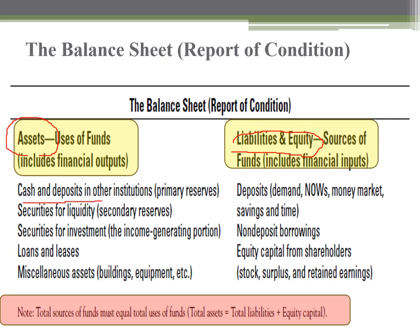The assets are comprised of cash and deposits in other institutions, called the primary reserve, and securities for liquidity, called the secondary reserve. Then we have securities for investment as the income-generating portion, followed by loans and leases, and finally fixed assets of the bank, referred to as miscellaneous assets.